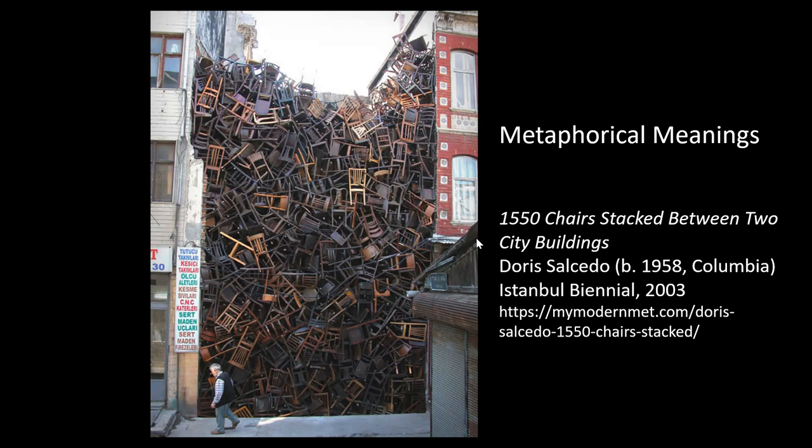Back to Salcedo's 1,550 chairs — we can talk about metaphorical meanings. This is actually a representation of an uprising that occurred in Colombia, her native country, back in 1985. A lot of people were displaced, had to leave their homes, and there were quite a few deaths. The chairs represent this kind of upheaval in life. Maybe they stand for individual people, maybe for places that were destroyed. The meaning really depends on knowing aspects of the story, but visually, in person, it must have been quite an experience to stand in front of this wall of chairs between two buildings and feel that oppressive weight.